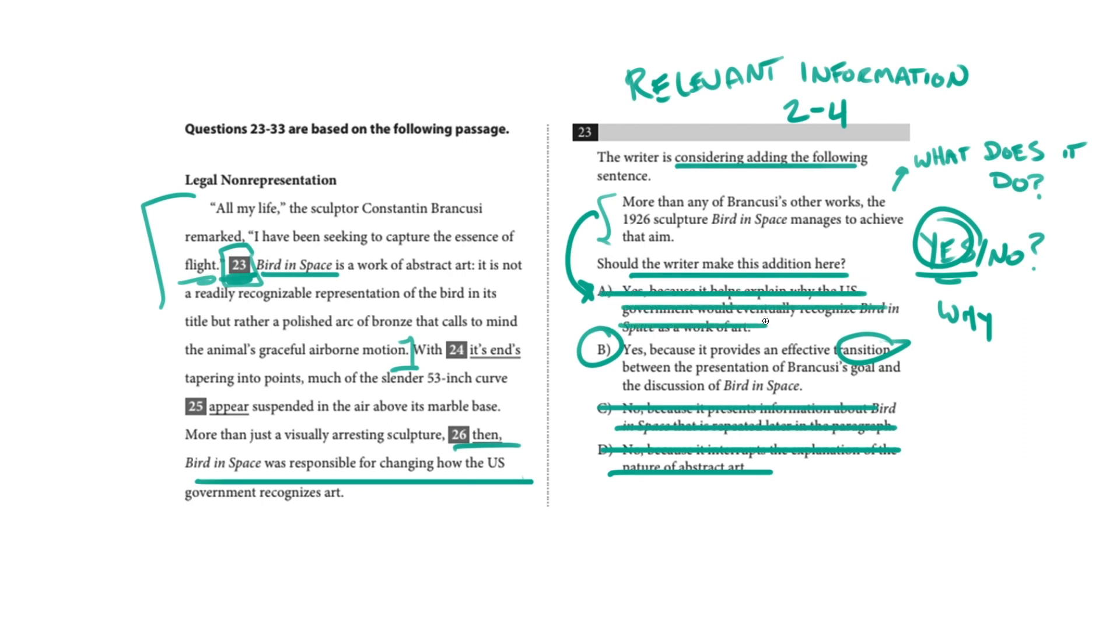So, when you are asked, should the writer make this addition, first, focus on the context. Where is it fitting in exactly? Because it could be that the sentence being proposed makes more sense here, or here, but not here. So, you want to focus on the fact of whether or not it is immediately relevant in the specified spot, not could it fit somewhere else in the paragraph. It probably could. But here we have this reference specifically. The sculpture manages to achieve that aim. What aim? Capturing the essence of flight. Right? It even makes a reference back to the previous sentence.